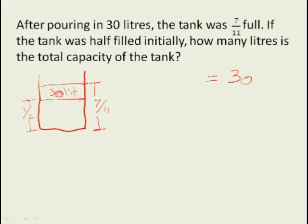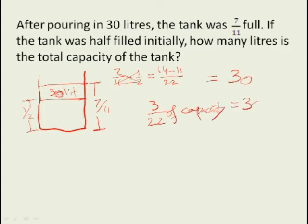So what is this 30 liters equal to? This 30 liters in terms of fractions is equal to the difference between 7 by 11 and a half. 7 by 11 minus half is how much? If you have seen the videos on fractions basics, you'll know the easier method is the crossing: 2 times 7 gives you 14, minus 11, over 22. So that is 3 over 22. 3 over 22 of the total capacity of the tank is 30.